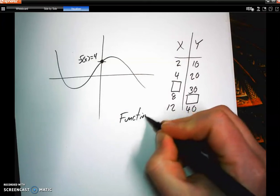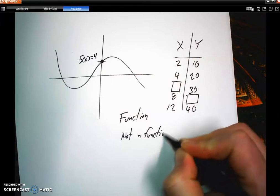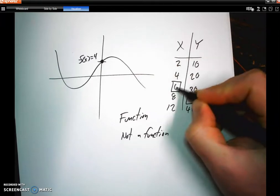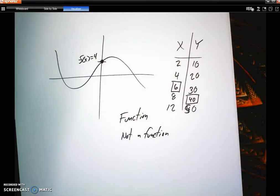What is a function? What's the difference between a function and not a function? And just answering that question. By the way, two, four, six, eight, 12, 10, 20, 30, 40, this should actually be 50. So you're going to see stuff like that.